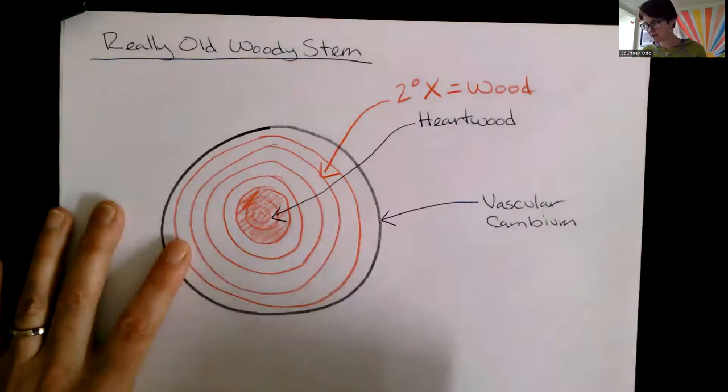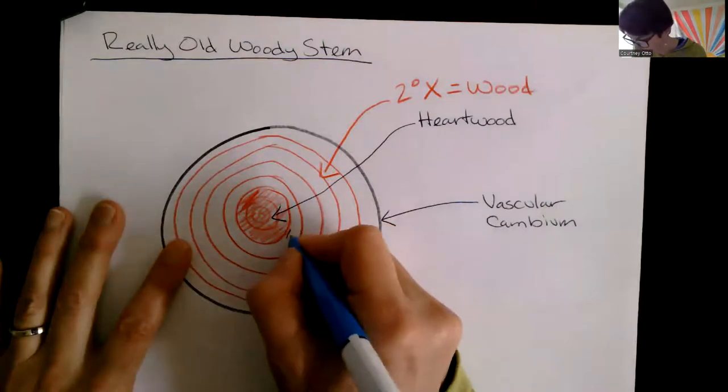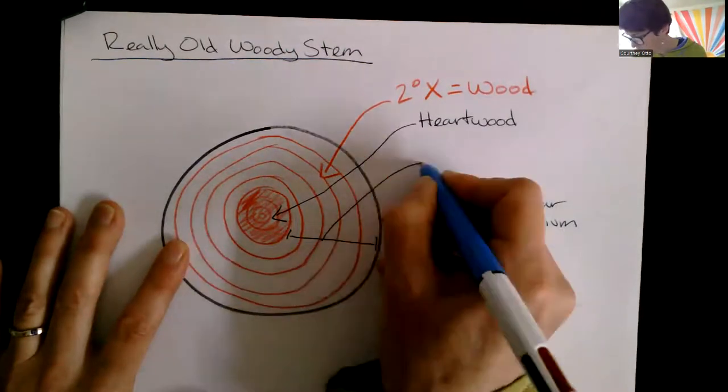And it's going to be inside. Right out here, the lighter region of secondary xylem, all of this right here we call sapwood.